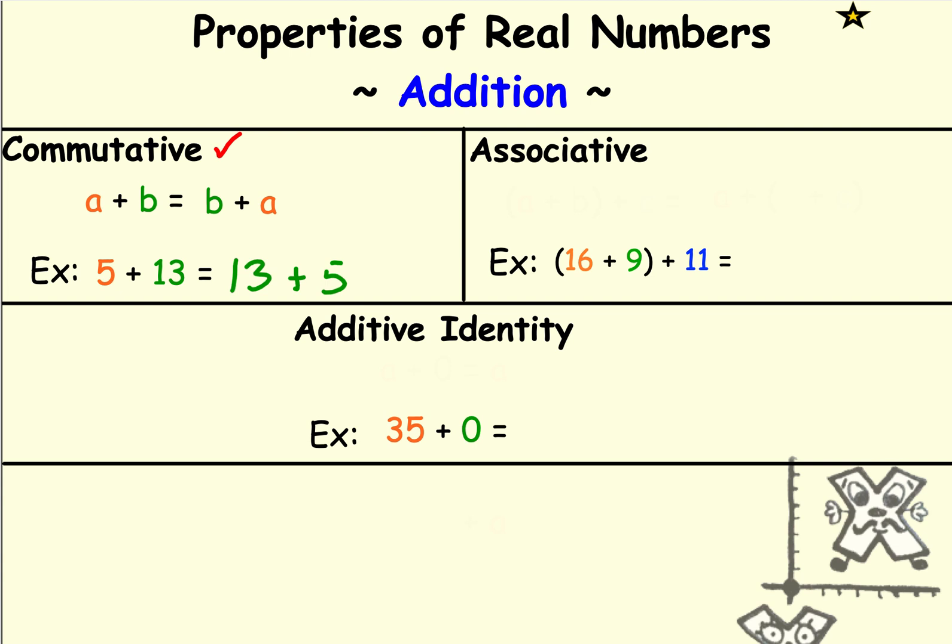So then we have the associative property. One of the things in the associative property is we usually have some type of grouping symbols. So let's say that we were doing (16 plus 9) plus 11. Normally, order of operations says do that first. If I add 16 plus 9, I have to think about what the sum is, and then I would have to take my answer and add 11. But I know that if I was to add 9 to 11 first, I would get 20.